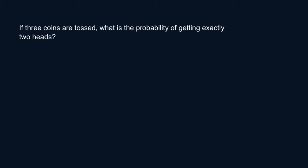This problem is asking for the probability of getting exactly two heads if three coins are tossed. To approach this problem, you need to know the total number of outcomes — the total number of combinations when tossing three coins at the same time.